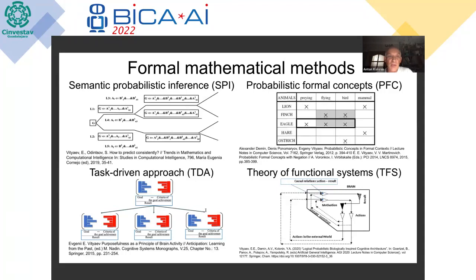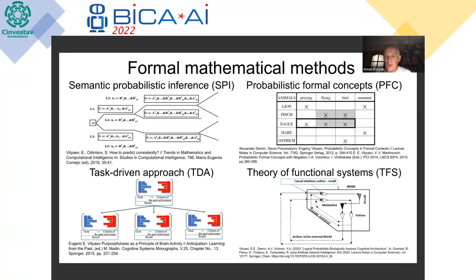When SPI is applied within the task-driven approach and formal concept analysis in real processes, at any decision point the system generates an action directed toward the world and also generates expectations about that action's outcomes. When positive or negative feedback arrives from the environment, the system compares expectations against actual results and either consolidates positive experience or decreases the probabilities that caused the action. This is the basis of the theory of functional systems (TFS) by Peter Anokhin.